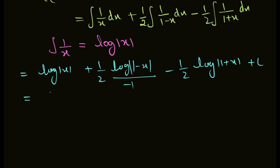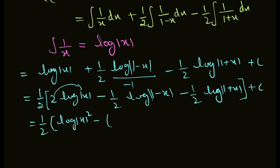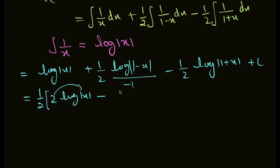Taking out the common factor: we can take 1 by 2 common. This equals 1 by 2 times [2 log x plus log(1 minus x) minus log(1 plus x)] plus C.